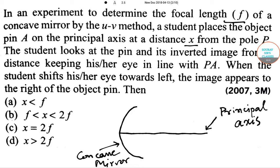It is given in the question that when the student shifts his or her eye towards the left, the image appears to the right of the object pin, that means object and image move in opposite direction.